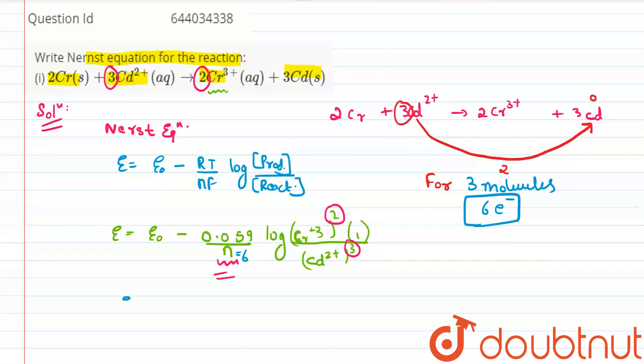So what will it finally become? It will become E equals E naught minus 0.059 divided by 6 into log of chromium 3+ raised to the power 2 divided by Cd2+ raised to the power 3. This is the final representation.